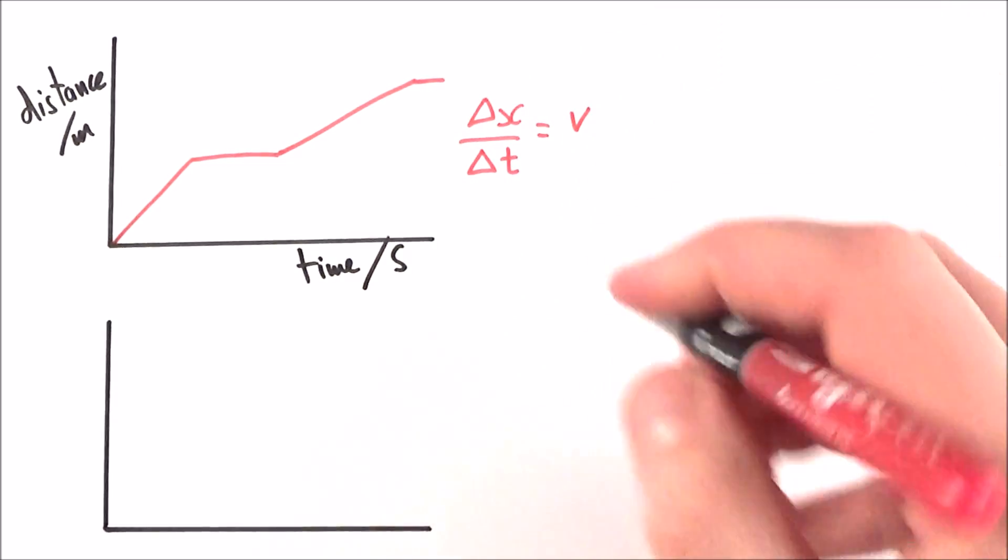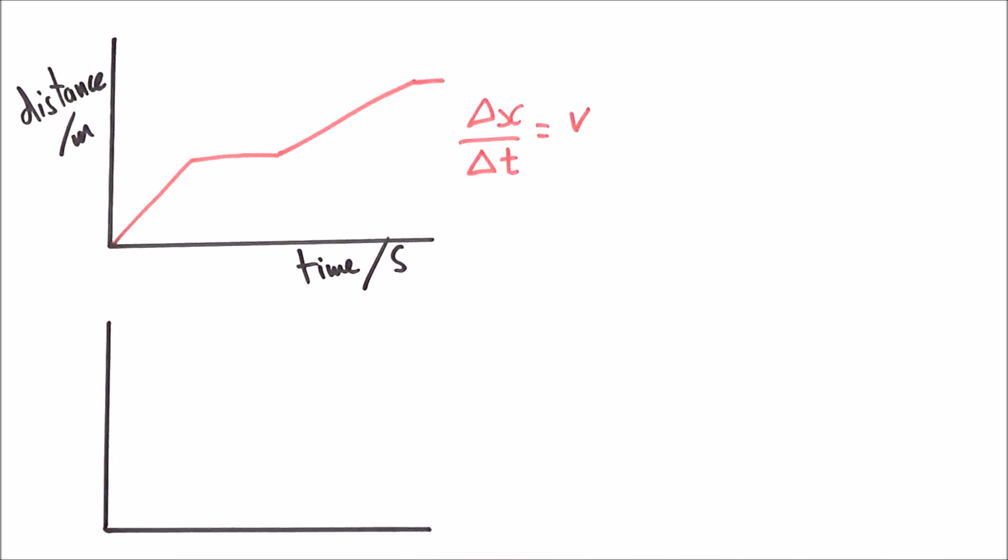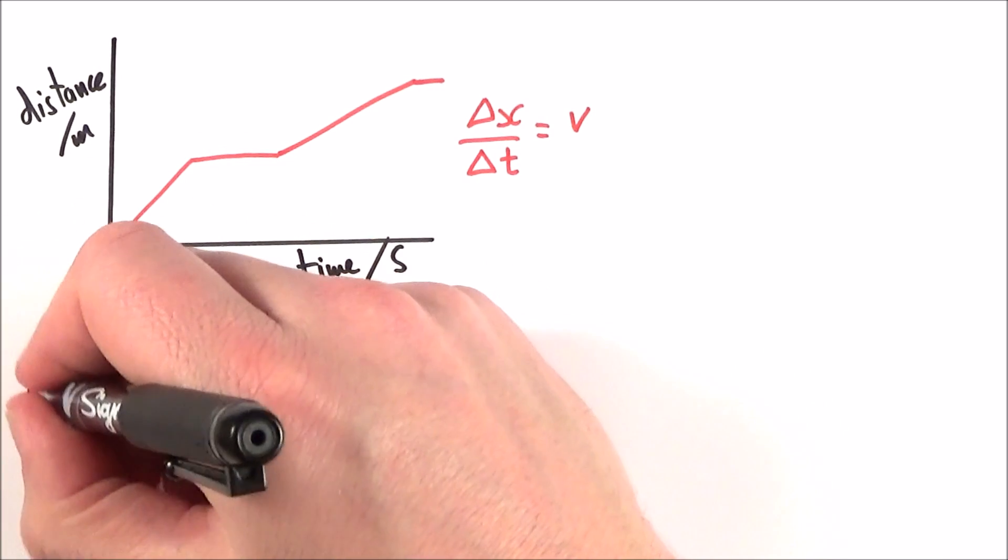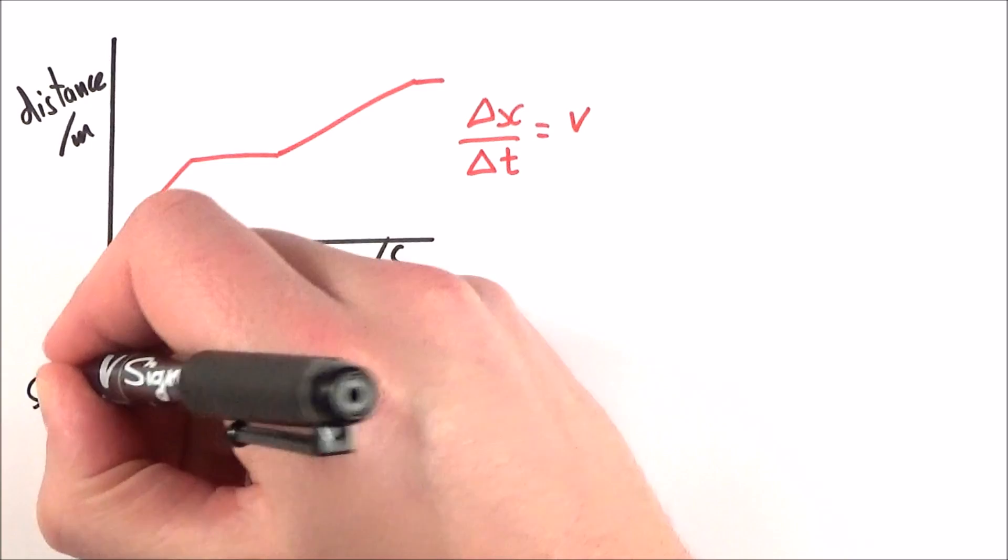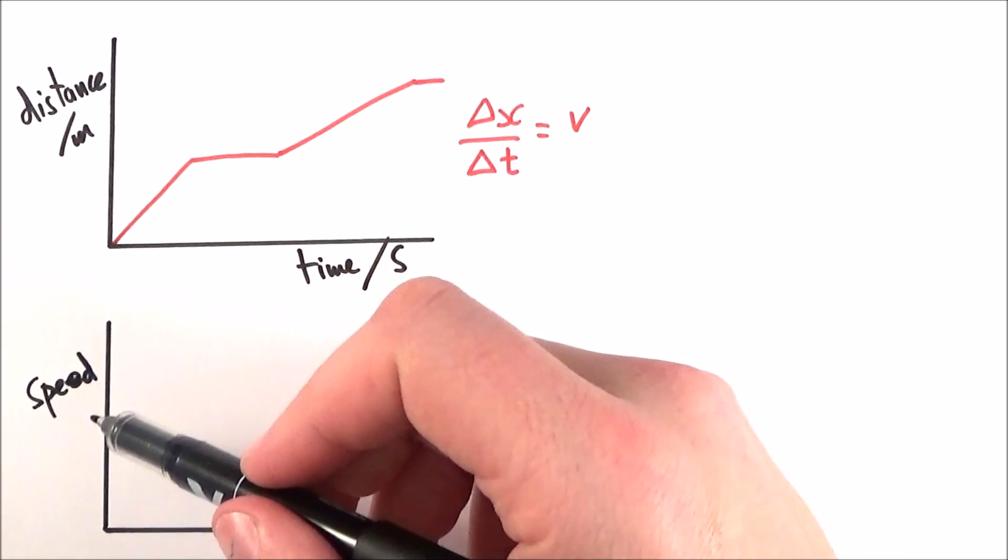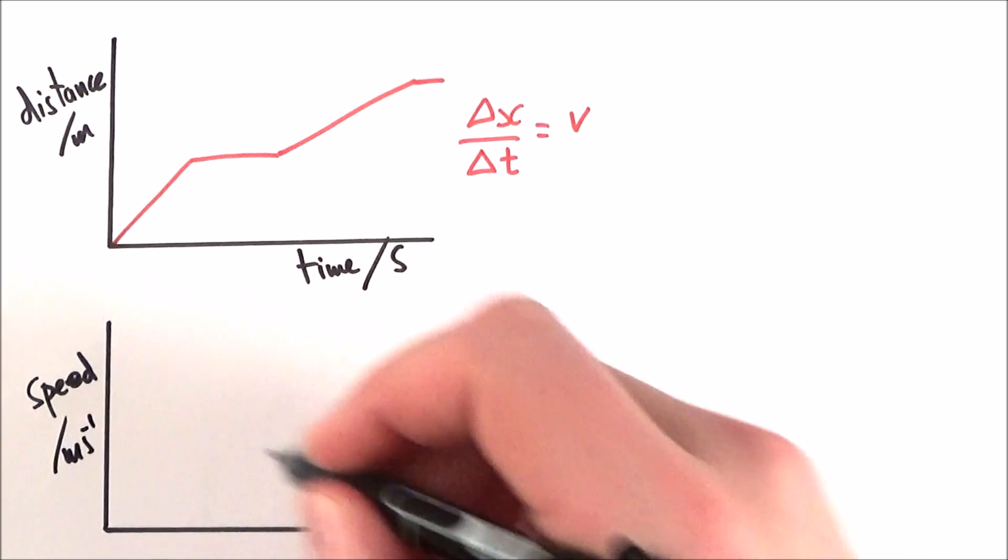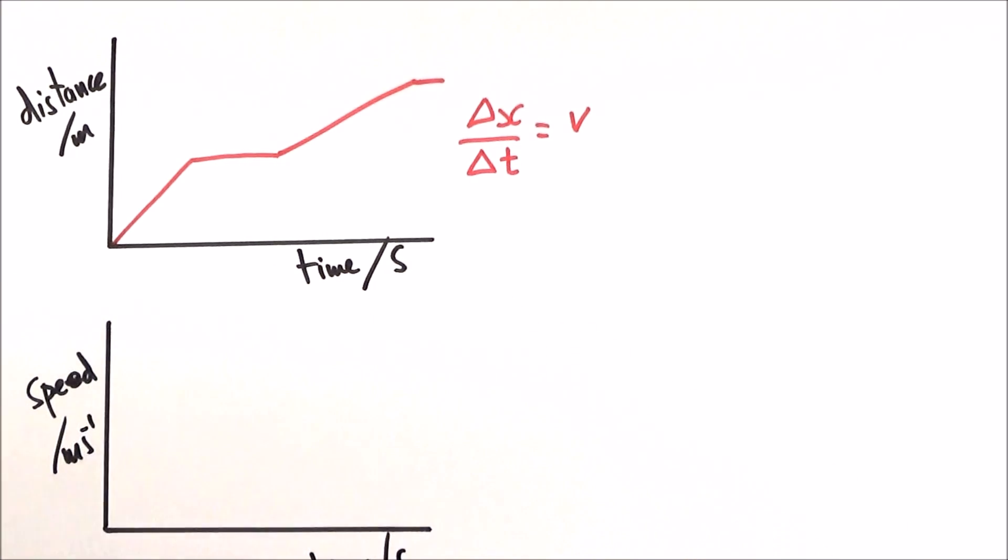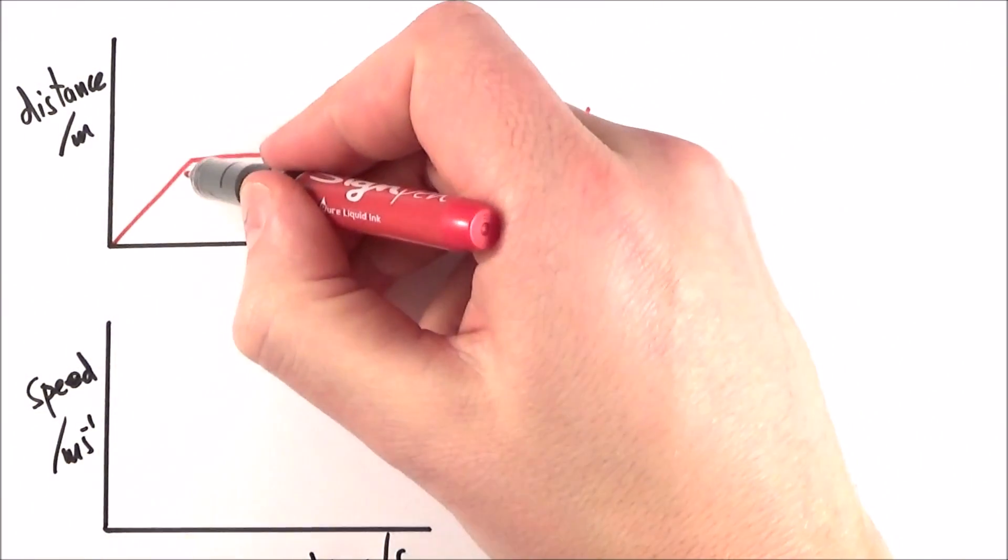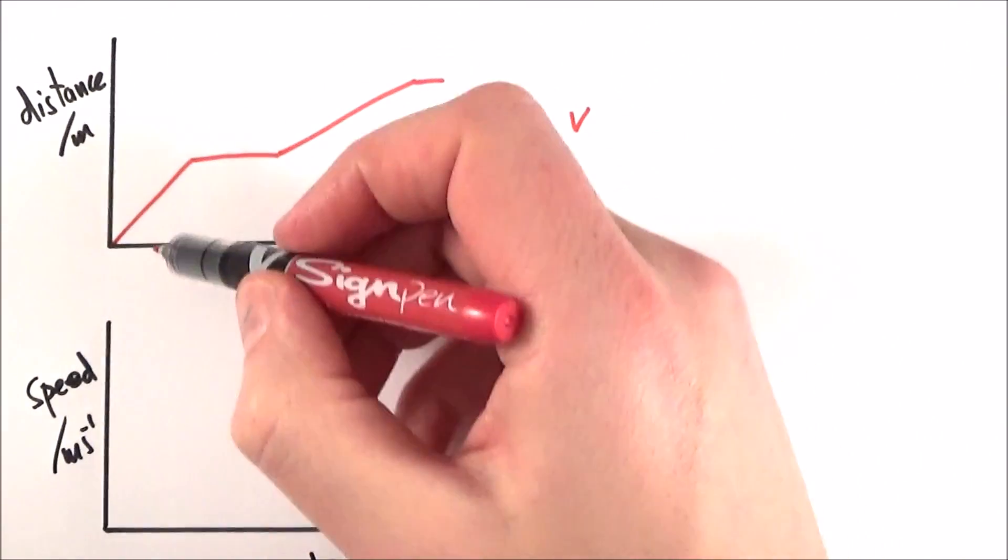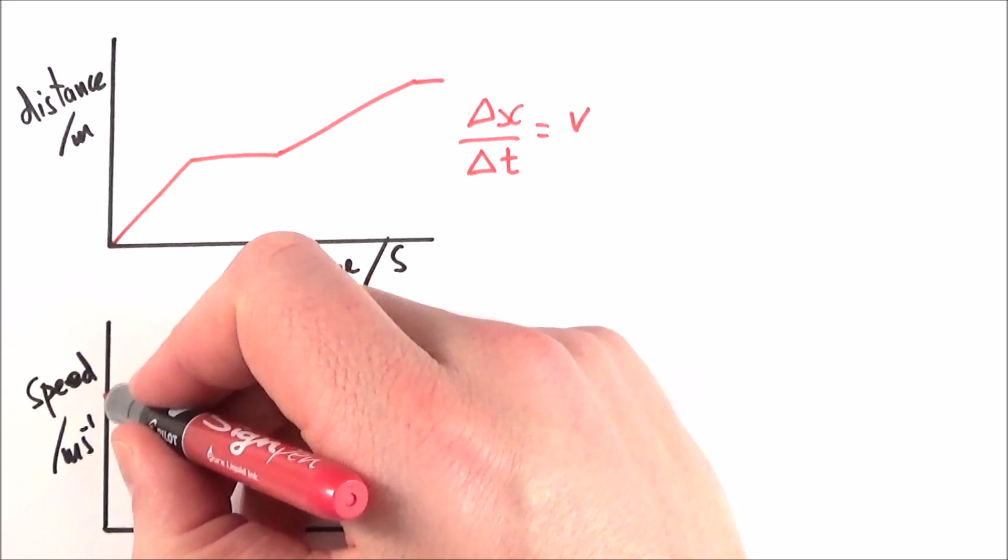And this, the rate of change of distance, is equal to our speed, and this quite nicely gives rise to a speed-time graph. So the speed of an object, because it's a magnitude, must always be a positive value. We have speed measured in meters per second and time measured in seconds. If we think about how the graph above relates to the one beneath it, we have something moving at constant speed.